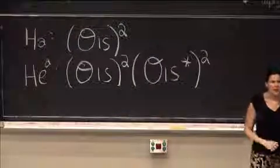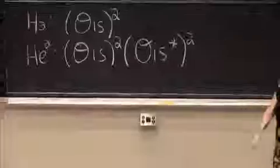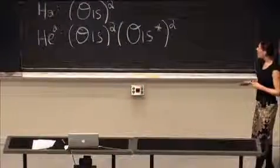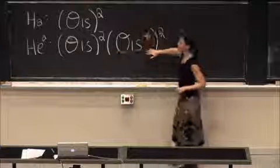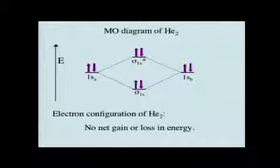We can compare the two electron configurations and think about what we figure out from them. We see that two are lowered in energy, two electrons are raised in energy, so we have no net gain or no net loss in energy for He2.